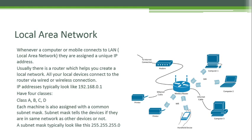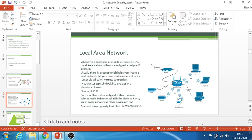Anytime the router needs to communicate with internal machines it uses the private IP address, and anytime your machine needs to connect to an internet server it uses the public IP address. Every machine is also assigned a subnet mask, which typically looks like 255.255.255.0. For machines to be on the same network, they all need to have the same subnet mask. There are four classes of IP addresses — class A, B, C, D — and a couple are reserved for local networks while others can be used on the internet. We'll explore those in our deep dive sessions.